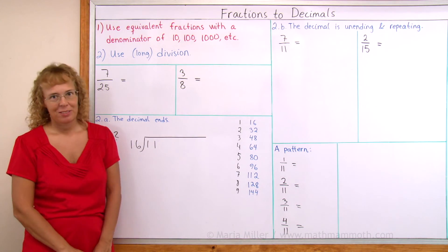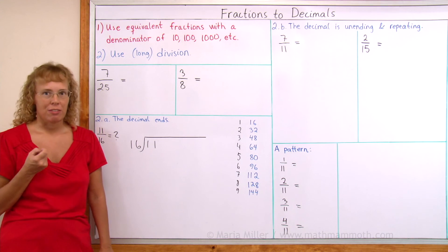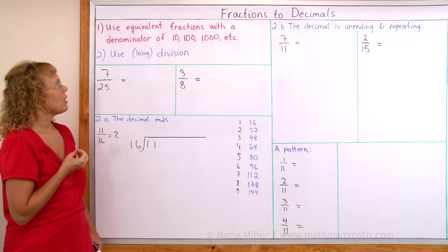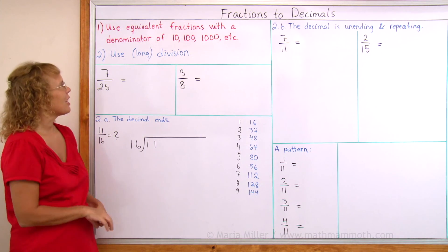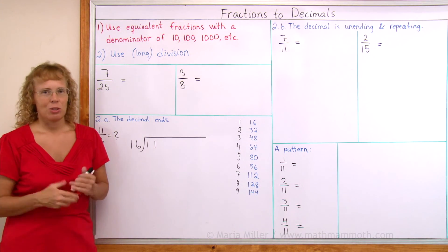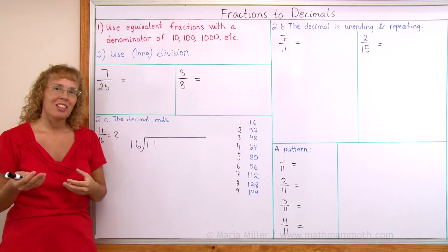There's two basic methods. One is we can sometimes use equivalent fractions with a denominator of 10 or 100 or 1000 and so on, powers of 10, and the other method is just to use division, either long division or using a calculator.